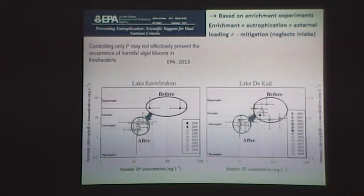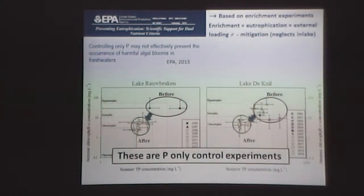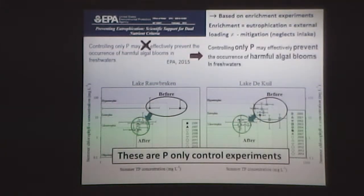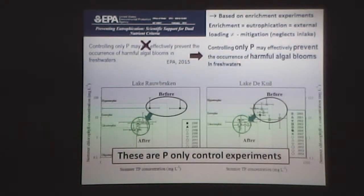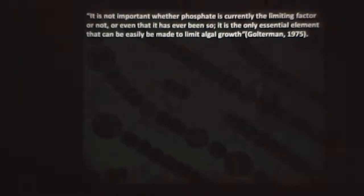They also neglect the in-lake situation. These two examples are phosphate-only control experiments — we did nothing about nitrogen. So the claim that controlling only phosphorus may be insufficient could easily be disproven. This is not based on whole-lake experiments — it is based on lab enrichment experiments. And we know already, since 1975, that it's not important which element is limiting right now, but that phosphate is the one that can most easily be made limiting for algal growth.